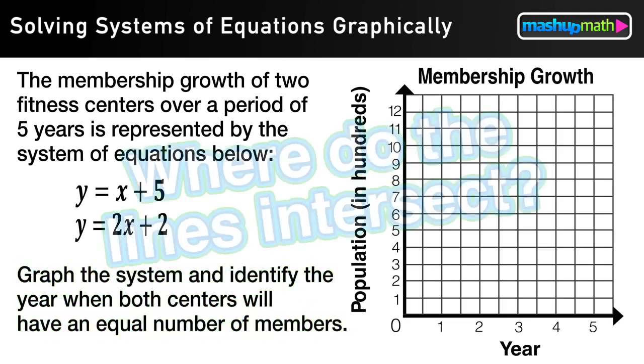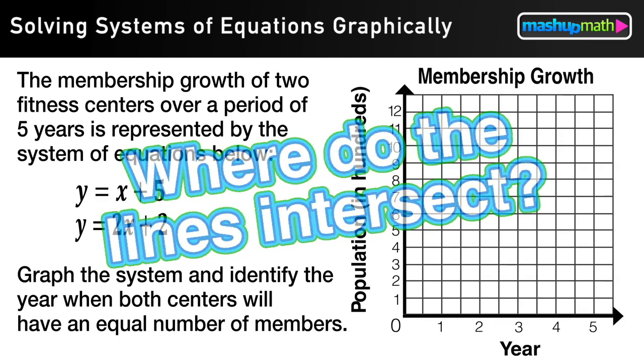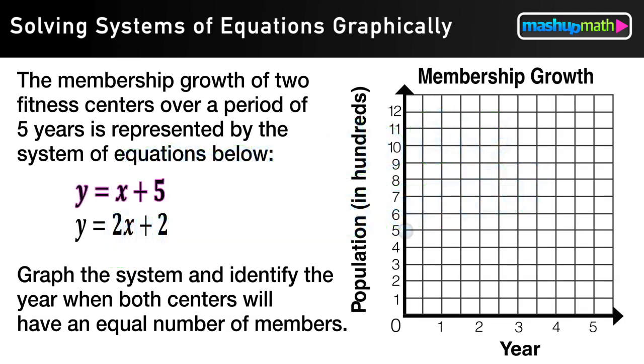So basically what we want to know is when are these two equations going to be the same, at what point? By graphing them we can easily find that point. So let's start out by graphing the first equation, y equals x plus 5.